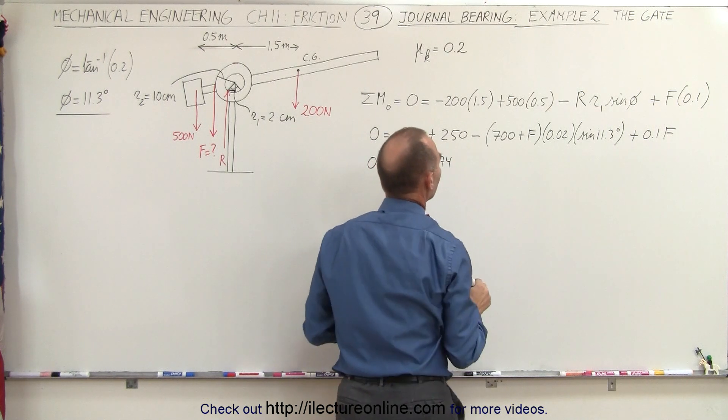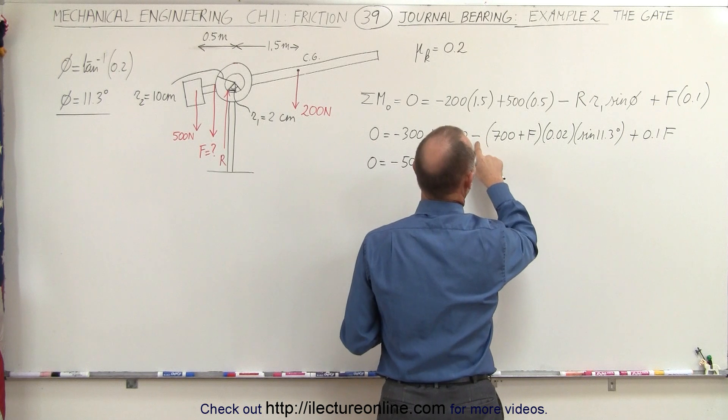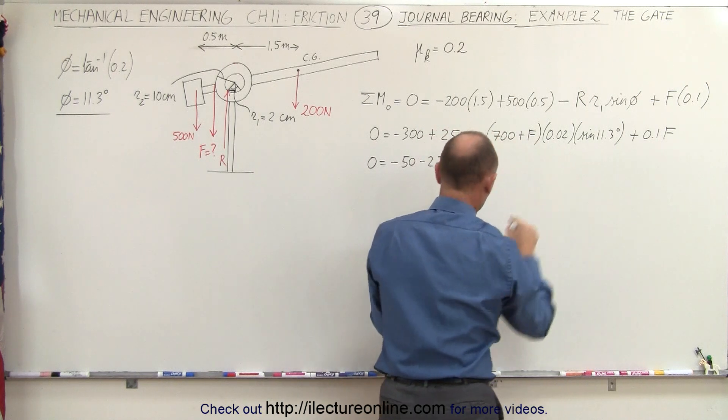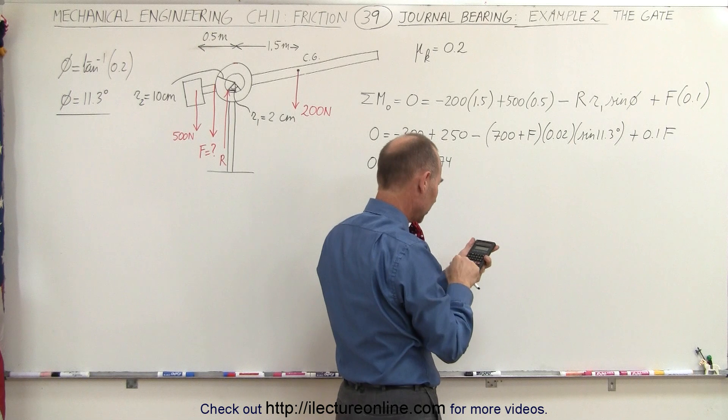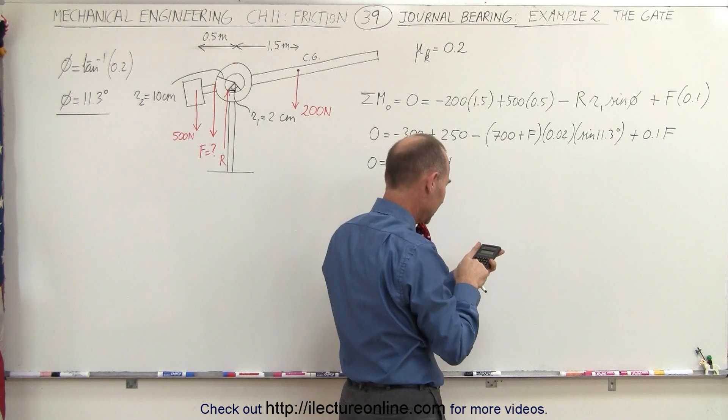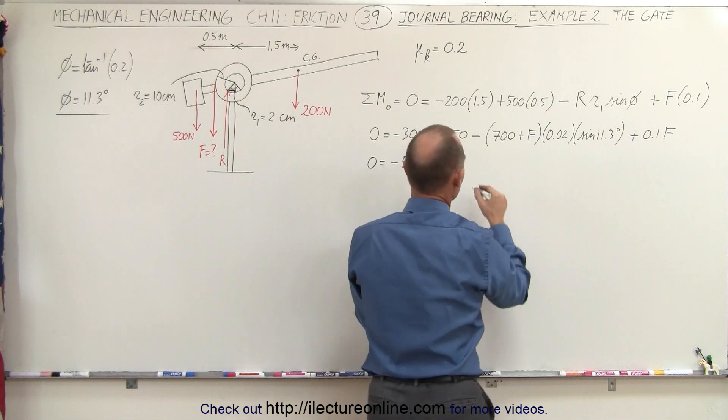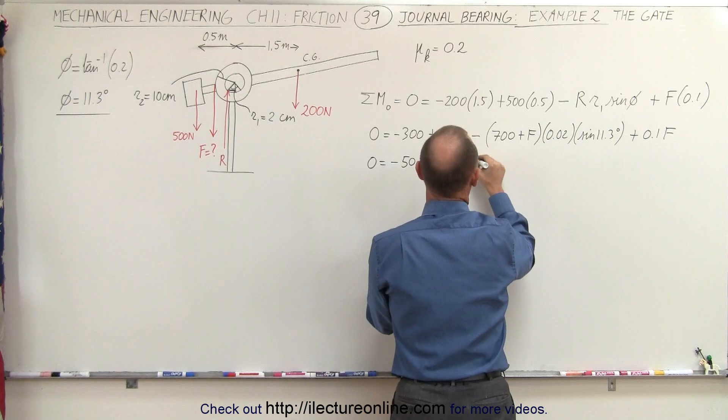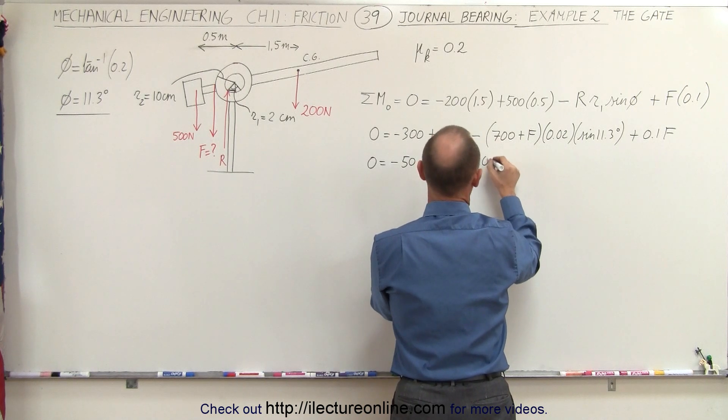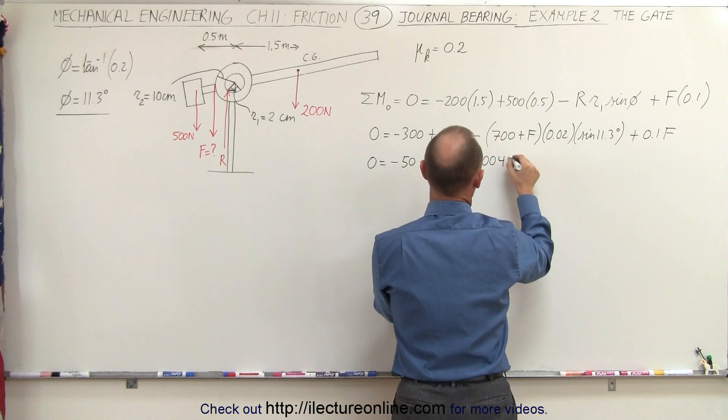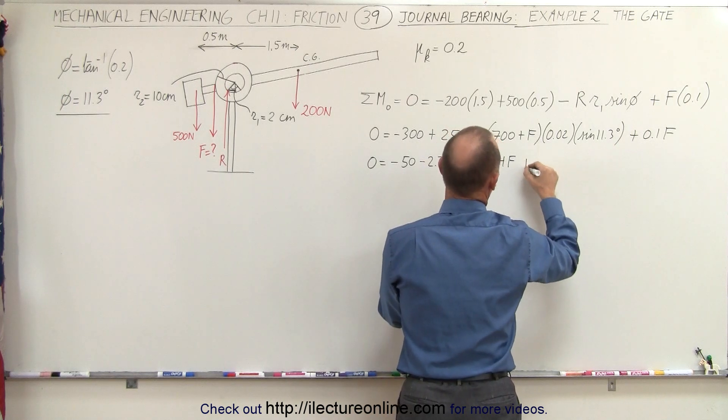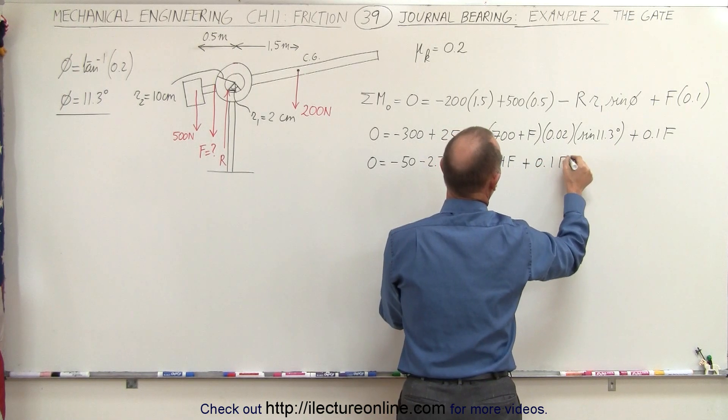And now we have minus F times this. So 0.02 times sine of 11.3 degrees equals, so that would be minus 0.004 F, and then plus 0.1 F.